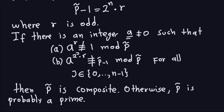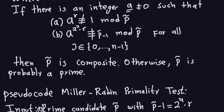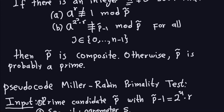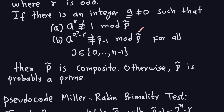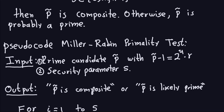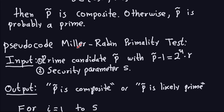As I mentioned in the previous video, the probability of this test being wrong is very small, as long as you choose a sufficient number of integers A. Now the pseudo-code of the Miller-Rabin primality test is basically an implementation of this theorem with a little bit extra that I will explain.